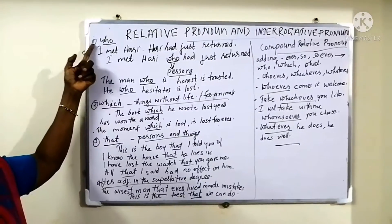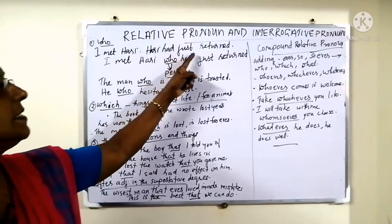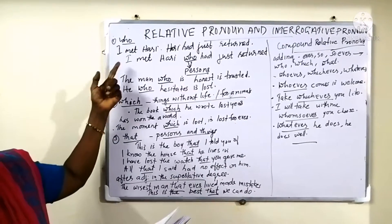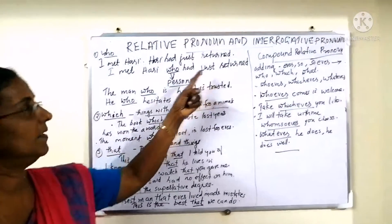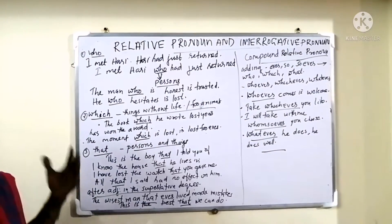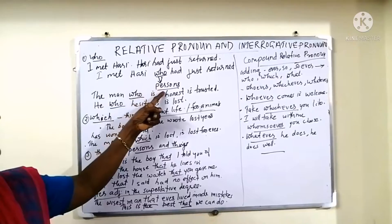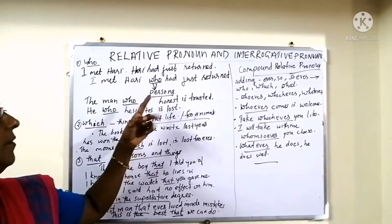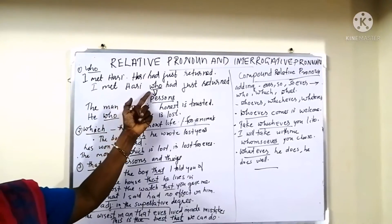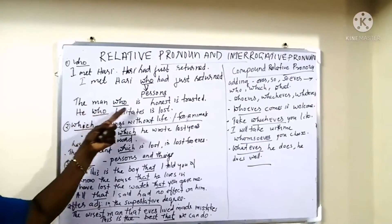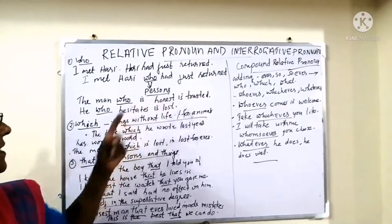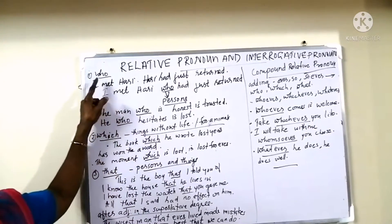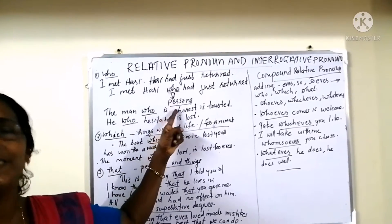Relative pronouns. The first one is 'who.' For example: I met Hari. Hari had just returned. Now combine these two sentences with the relative pronoun 'who': I met Hari who had just returned. The relative pronoun 'who' is used for persons. It may refer to a singular or plural use. For example: The man who is honest is trusted. He who hesitates is lost. So 'who' is used for persons.